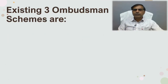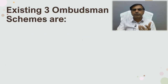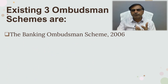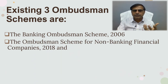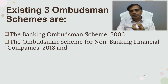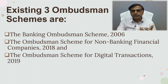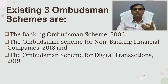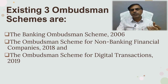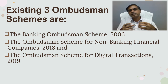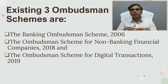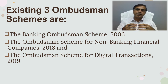The three existing Ombudsman schemes were: the Banking Ombudsman Scheme 2006, the Ombudsman Scheme for Non-Banking Finance Companies 2018, and the Ombudsman Scheme for Digital Transactions 2019. All three are now being merged into the Integrated Ombudsman Scheme 2021.